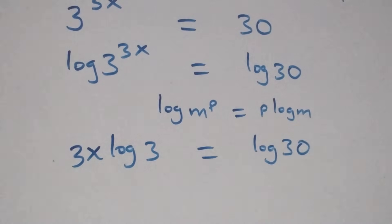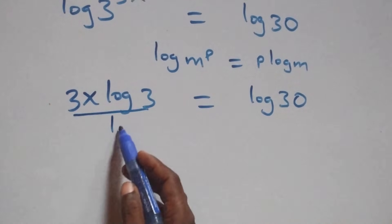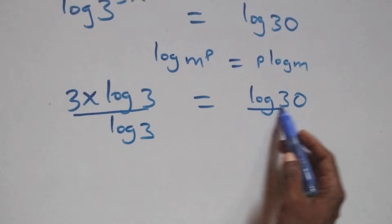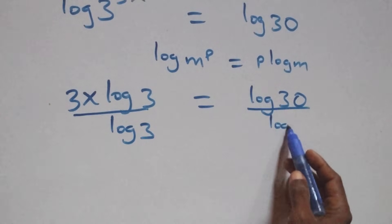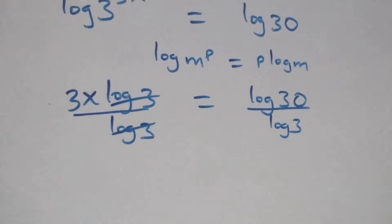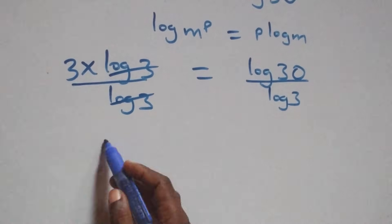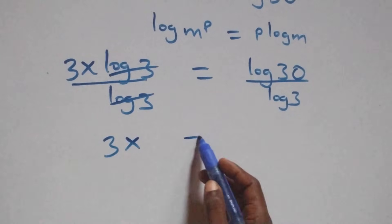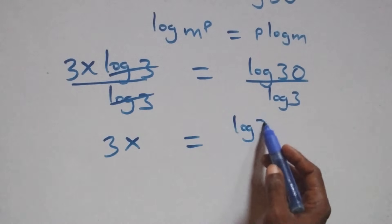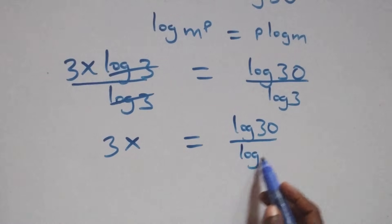Then what we have becomes 3x log 3 equals log 30. In the next step, we divide both sides by log 3. Log 3 cancels each other, and we have 3x equals log 30 over log 3.